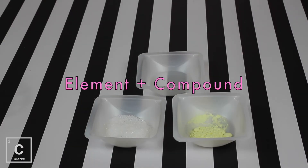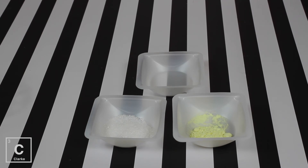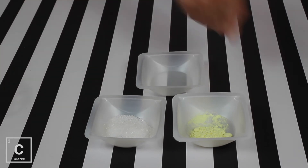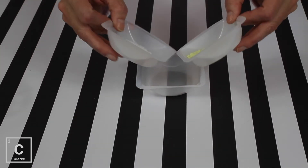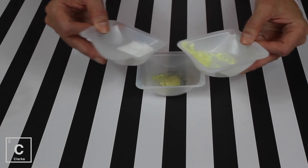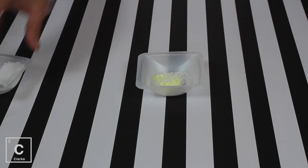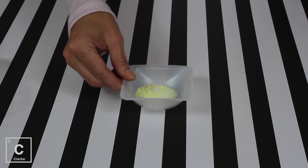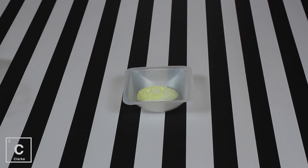A mixture can also be composed of a compound and an element. Here we've got sulfur — an element — and lead nitrate — a compound. If we mix those together and just blend them, you see nothing is really happening. They're sharing the same space at the same time, but they're not chemically joining together. They each stay separate and retain their own properties.